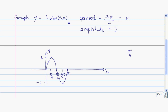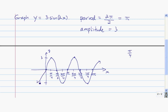Press pause and complete one more cycle of this graph. One more cycle still has a period of pi, so we mark off another period and divide it into four pieces. Those x-values are 5pi over 4, 3pi over 2, 7pi over 4, and then back at 2pi. We then plot the five key points: beginning, up at the max, back at zero, down at the min, back at zero. That's another cycle, and this is going to keep going on and on. That is the graph of y equals 3 times the sine of 2x.